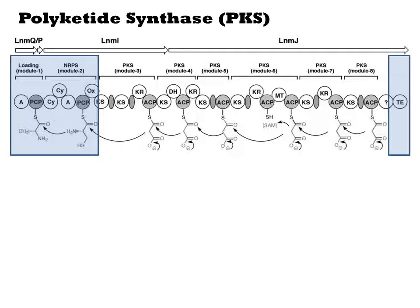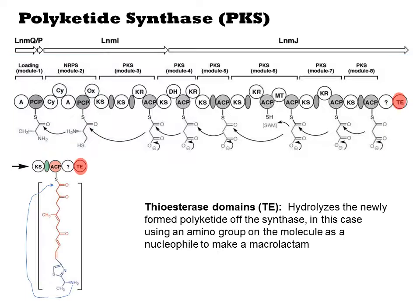At the N and C termini of the synthase are the loading and thioesterase domains respectively. The loading domains are responsible for choosing the first carboxylic acid that initiates the polymer. The thioesterase domains are responsible for releasing the polyketide from the synthase by breakage of the thioester linkage. Thioesterase domains solve the task of releasing the product in various ways — for example, the polyketide could be released as a free acid by hydrolysis with water, or it could be reduced off to a ketone. Here we have one that produces a macrolactam instead: an amino group in the starting unit attacks the thioester, producing an intramolecular amide and release.